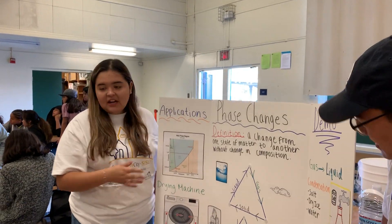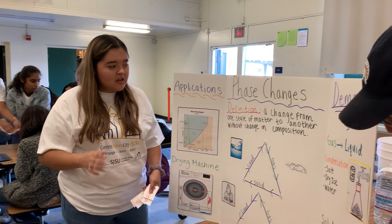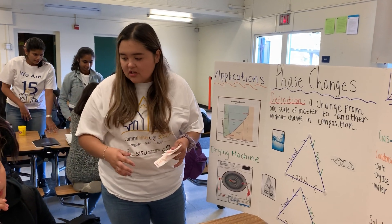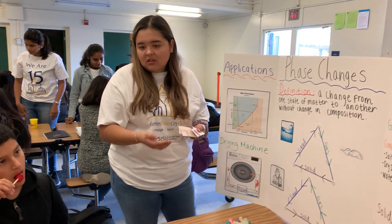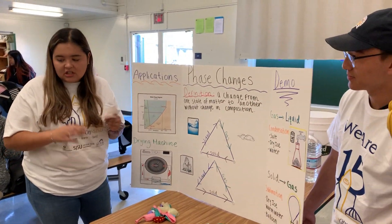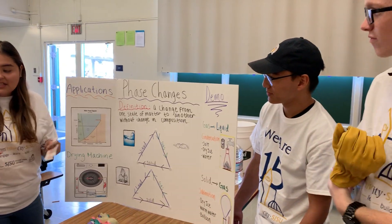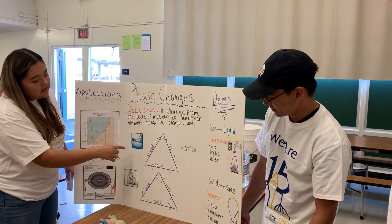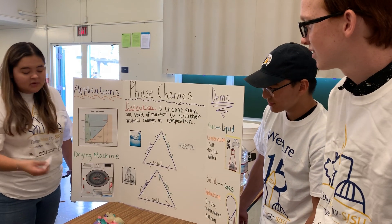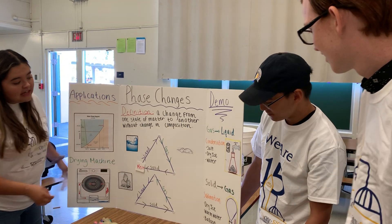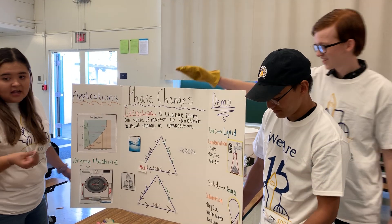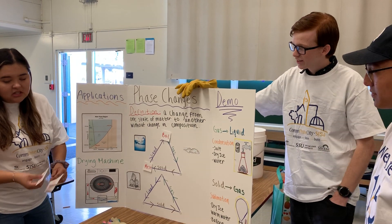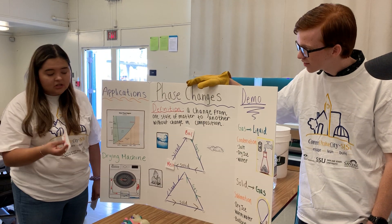Physical changes are a change from one state of matter to another without a change in its chemical composition. It uses temperature change to change its form, but no other chemicals are involved. So in order to go from a solid to a liquid, the item has to melt. In order to go from a liquid to a gas, the item has to boil. And in order to go from a gas to a solid, the item has to go through something called deposition.